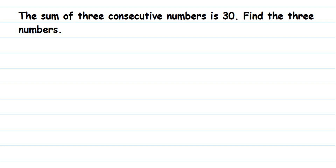Here's a question: the sum of three consecutive numbers is 30 — find the three numbers. They have given three consecutive numbers. Consecutive means numbers which come one after the other, like 6, 7, 8 or 11, 12, 13 or 100, 101, 102. So the next number follows in sequence, and the sum of three consecutive numbers is 30.